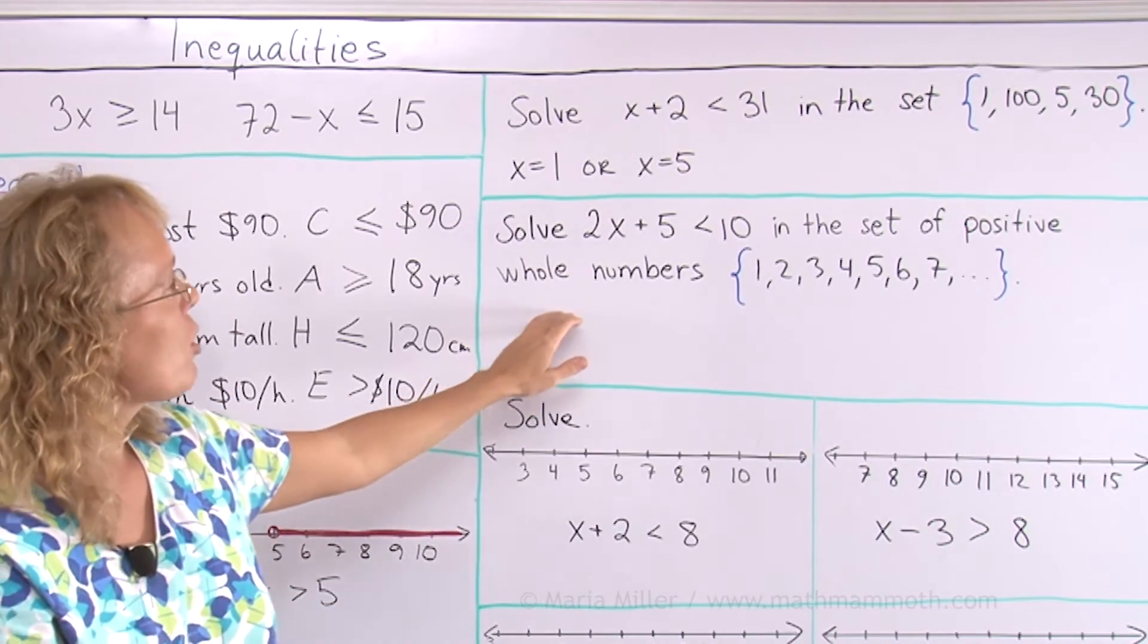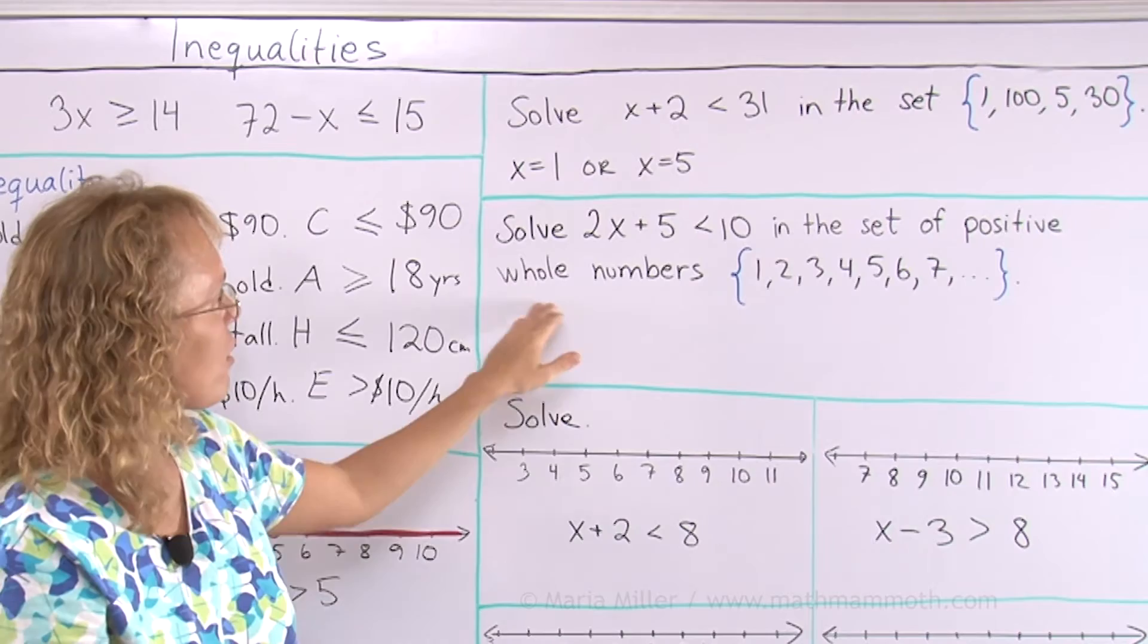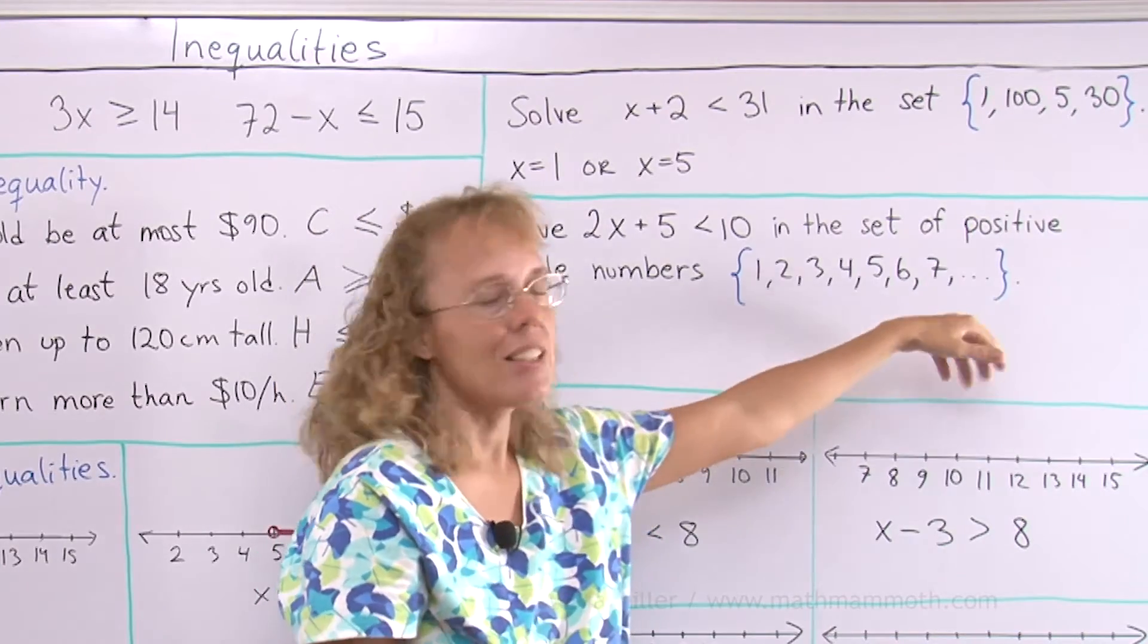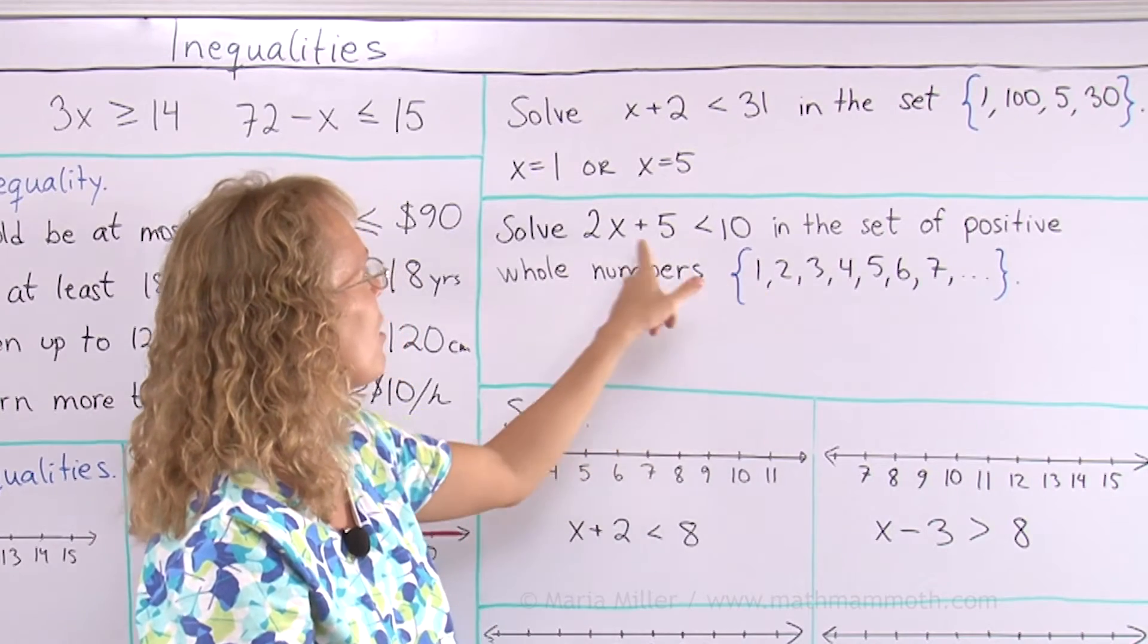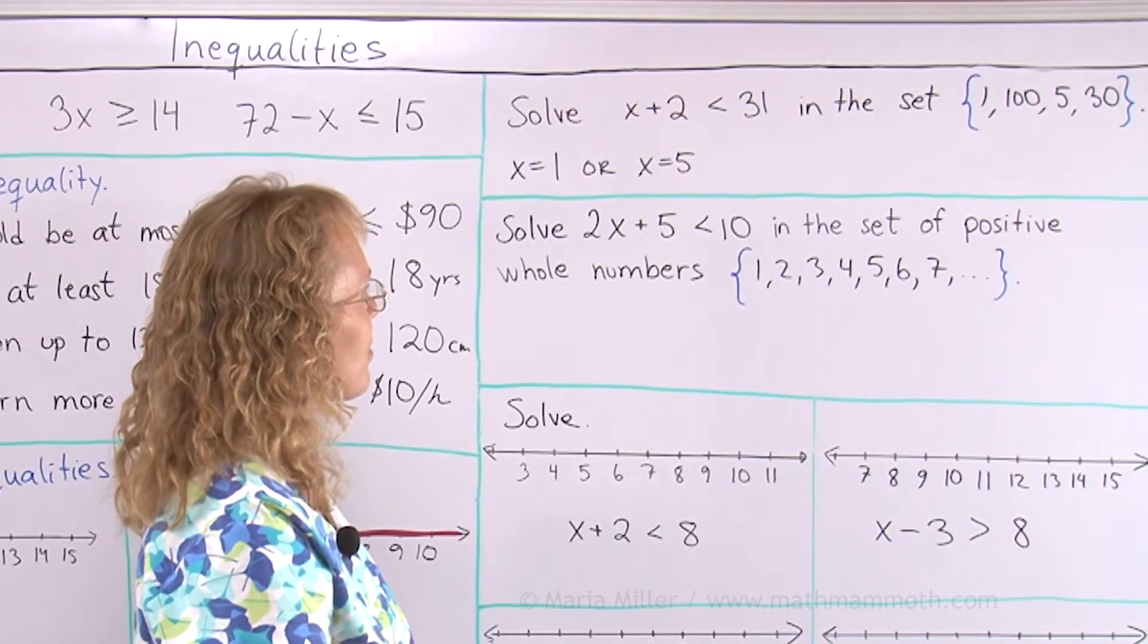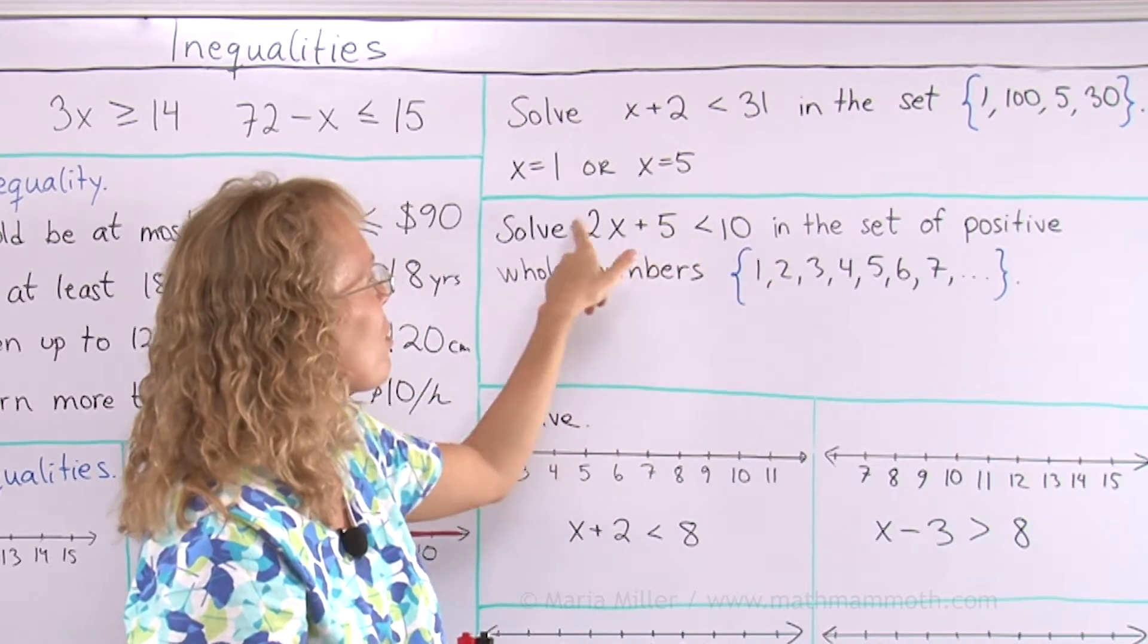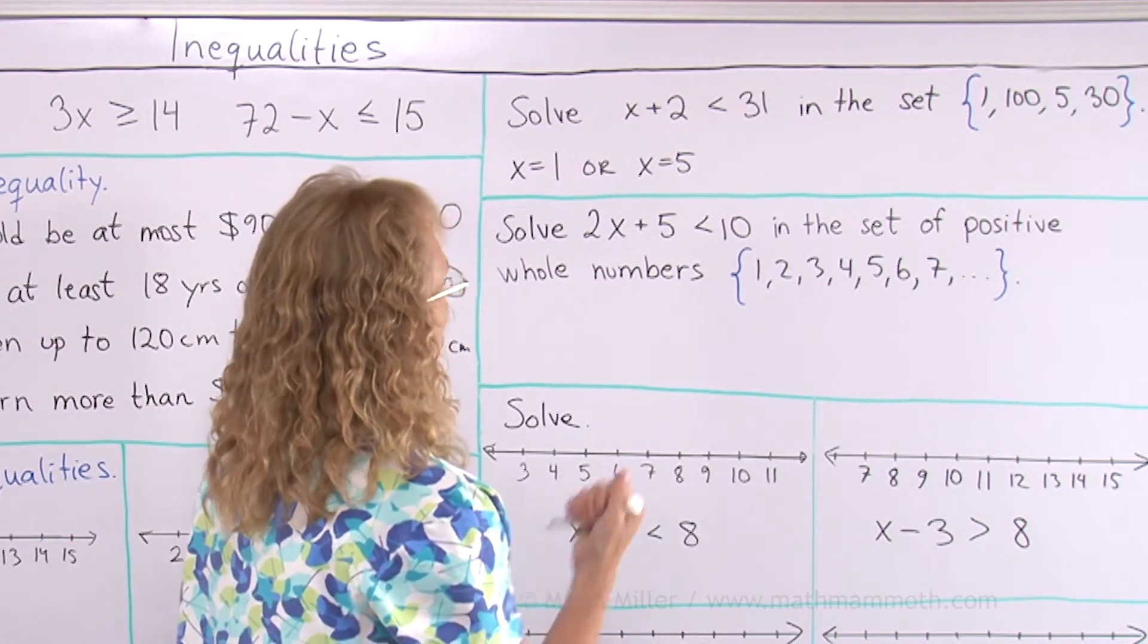Or how about this way? Solve 2x + 5 < 10 in the set of positive whole numbers. In case you don't know what is the set of positive whole numbers, it is this set: 1, 2, 3, 4, 5, 6, 7, 8, 9, etc. The counting numbers. So all we need to do is now try every number from here. Is that gonna take us forever? Try every number? Well, fortunately there's the less than. So surely after a while this won't work anymore. Let's just try.